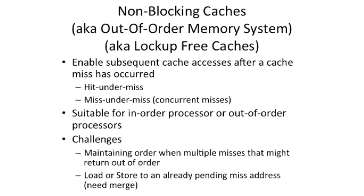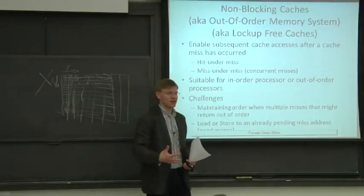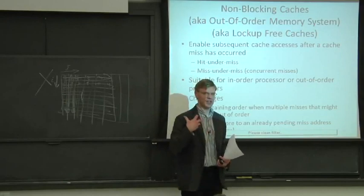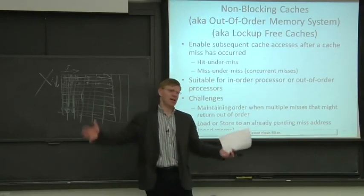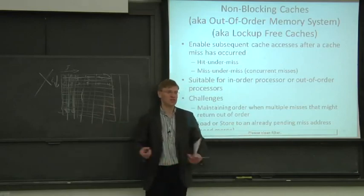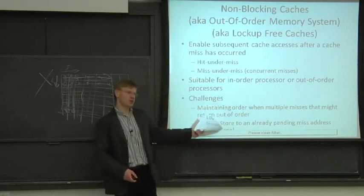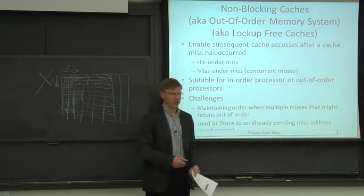What does a non-blocking cache allow you to do? It enables subsequent memory operations to occur from the main processor pipeline even when you have a miss earlier in your instruction sequence. All pipelines we've looked at up to this point — even our out-of-order pipelines — when you take a cache miss, you sort of stop the pipe, because we couldn't deal with memory coming back out of order. We didn't have enough bits to track all that. Now we're going to talk about structures that allow us to track out-of-order memory.